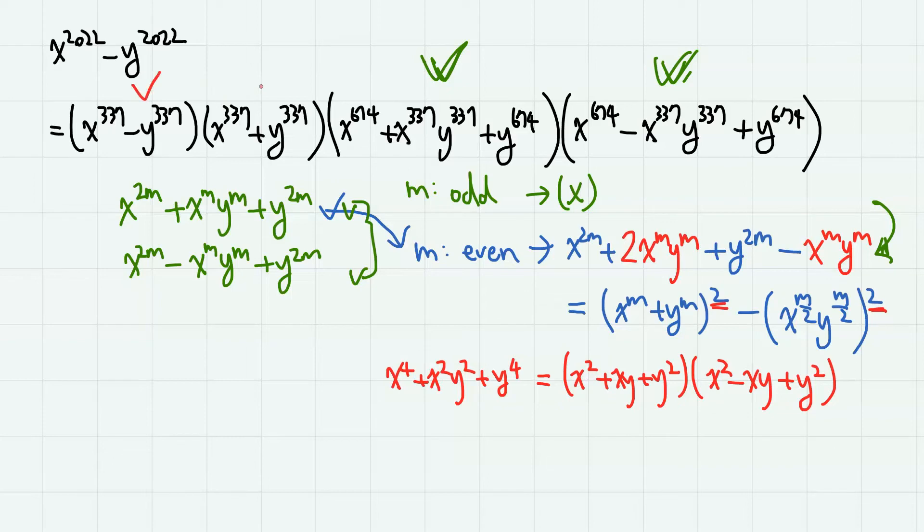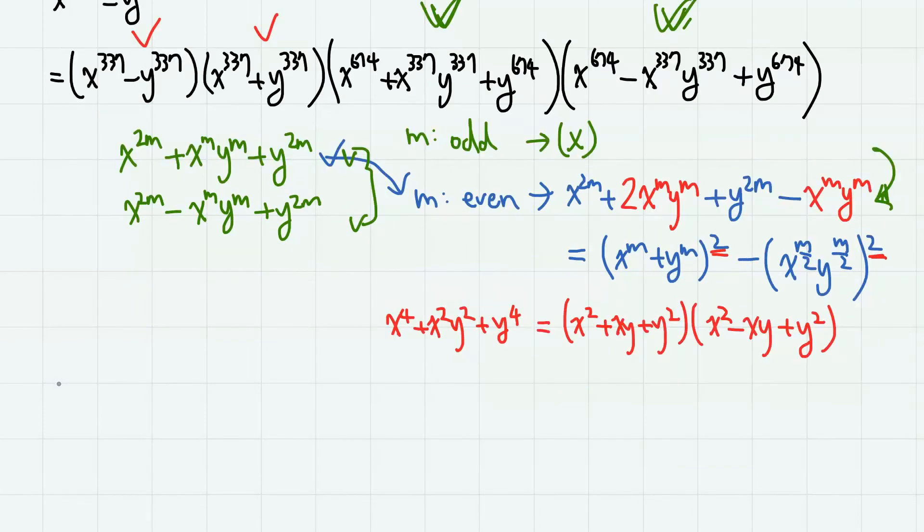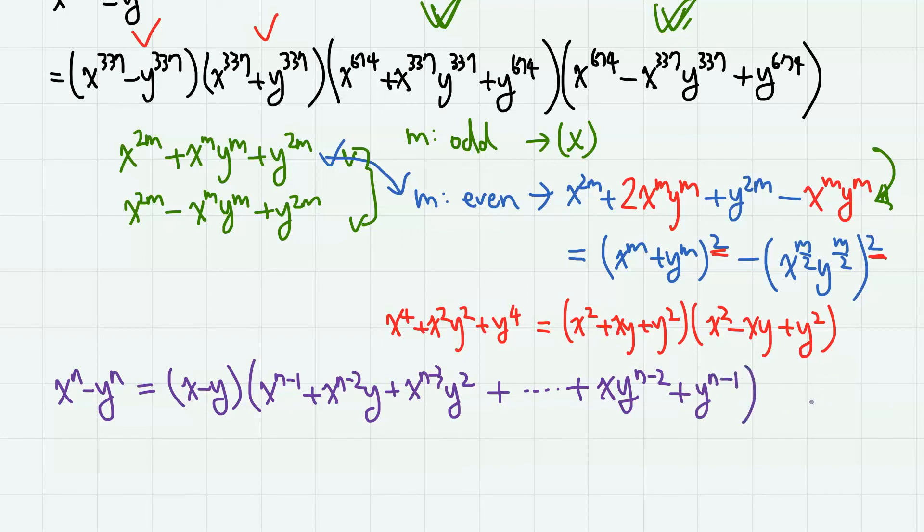Now let us take a look at the first two factors. Here we can apply this formula. So x to the power of n minus y to the power of n contains x minus y as a factor, and we have x to the n minus 1 plus x to the n minus 2 times y plus x to the n minus 3 times y squared, and in the end we have x times y to the n minus 2 plus y to the n minus 1. So this formula applies for all natural numbers equal to or greater than 2.